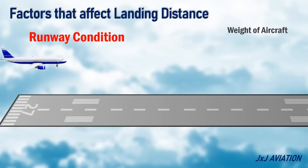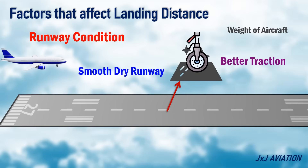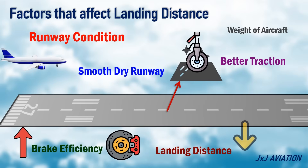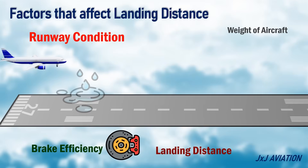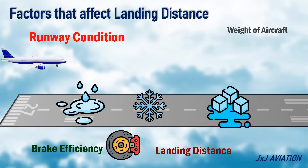Runway Condition. A smooth, dry runway provides better traction, so the brake efficiency increases and the landing distance would decrease. If the runway surface has water, snow, or ice, the brake efficiency reduces, which will increase the landing distance.